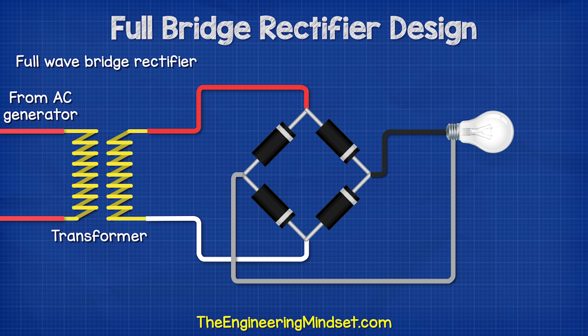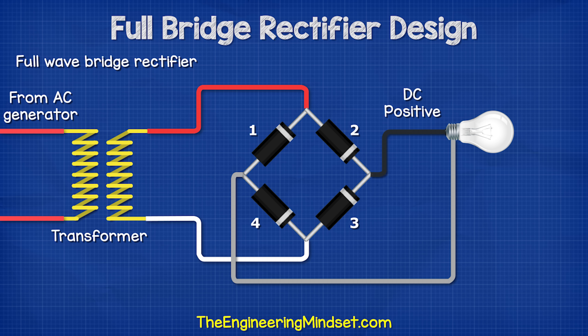The most common method used is the full wave bridge rectifier. This uses four diodes. The AC supply is connected between diodes one and two, with the neutral between three and four. The DC positive output is connected between diodes two and three, and the negative between diodes one and four.